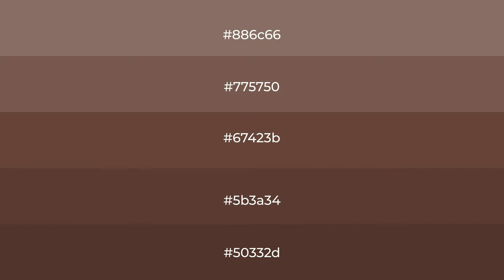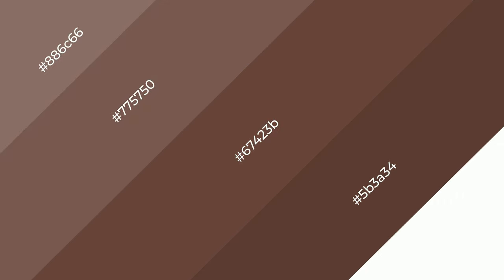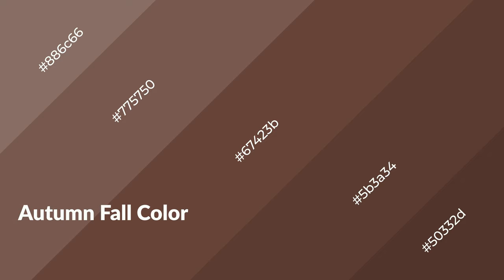To generate shades of a color, we add black to the color, and it is used in patterns and 3D effects. Layers and shades create depth and drama. Autumn fall is a warm color and it emits cozier and active emotion.